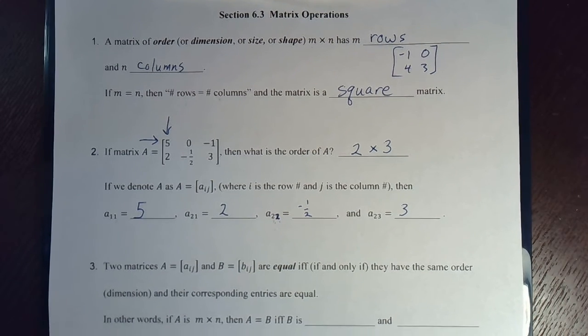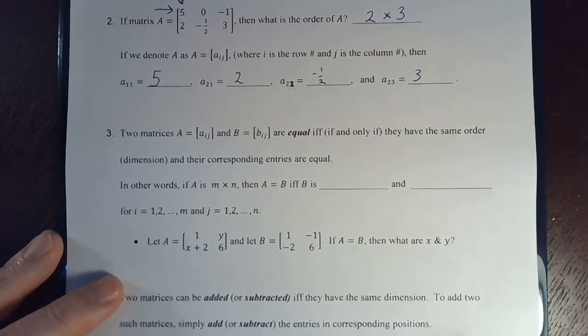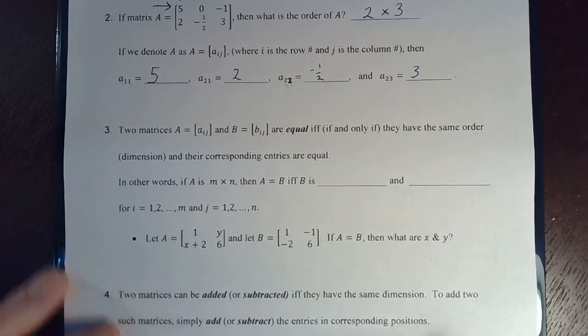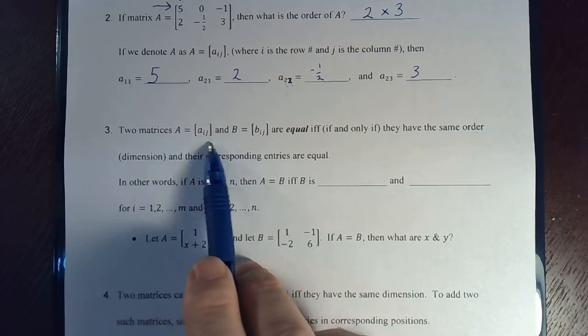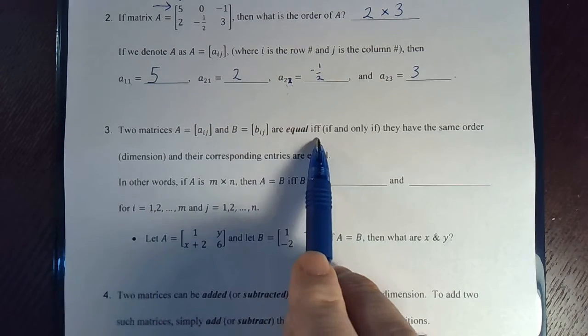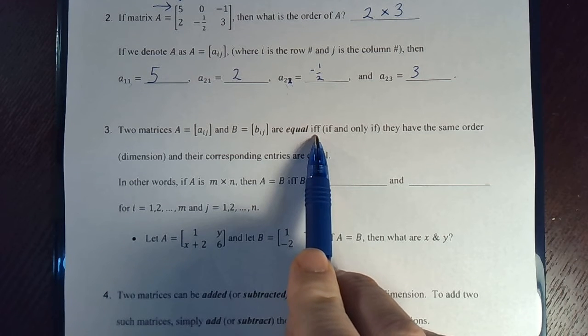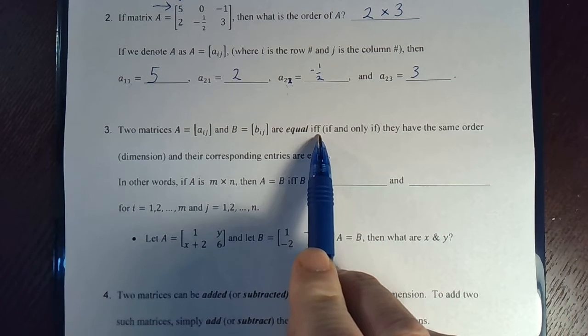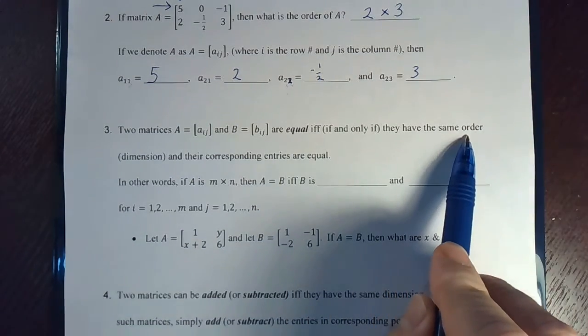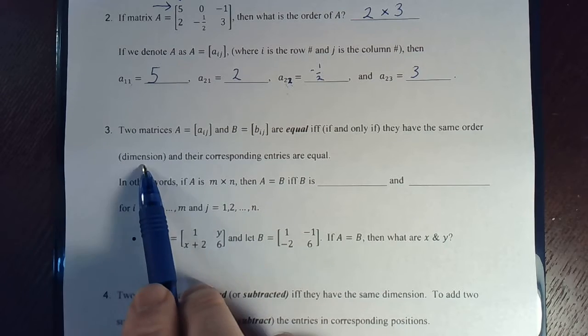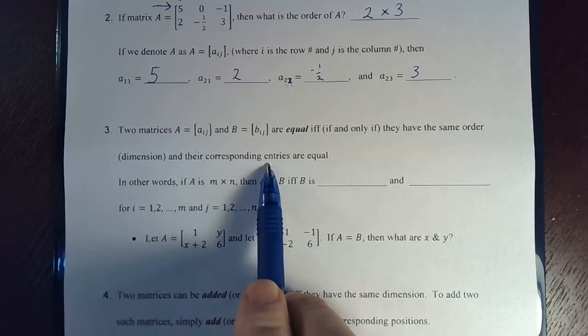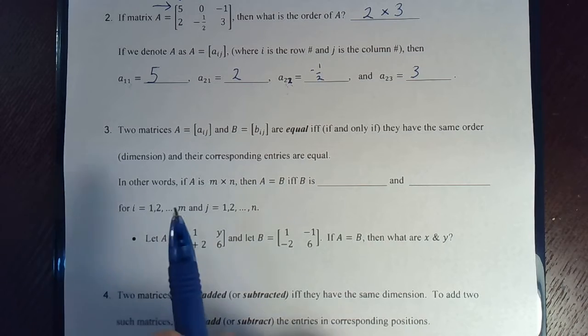All right. Well, what does it mean for two matrices to be equal to each other? So, if we have two matrices, A and B, they're equal. This symbol means if and only if. I frequently put this on the board. IFF, if and only if. They have the same order, which means that they have to be the same size or they could not possibly be equal to each other. And the corresponding entries are equal. So, that's pretty much exactly what you would expect.